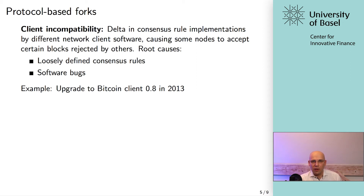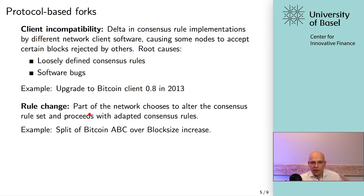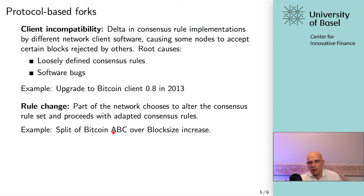Rule changes are deliberate changes to the protocol. When there are two different rule sets, you can have two versions of the blockchain. One example is the entire block size debate — the split into Bitcoin ABC, Bitcoin Cash, Bitcoin SV, and so on. Some people wanted larger blocks and to go above the one megabyte block size limit seen in Bitcoin Core. Protocol-based forks are not resolved automatically and may cause permanent splits.